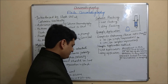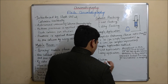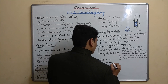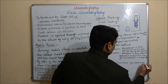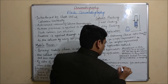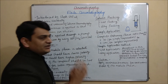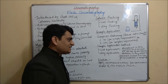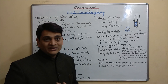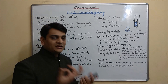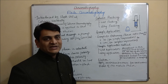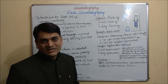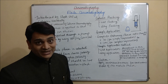Coming to the elution of the column: during elution we apply minimum pressure for continuous flow of the mobile phase. The solvent is eluted out along with the sample, and we collect those fractions. We then analyze the fractions using TLC — locating the sample takes place using the TLC method. The next step is locating the sample.